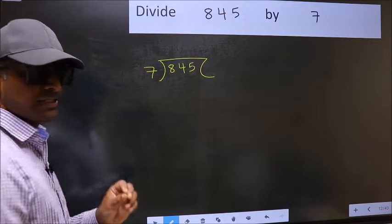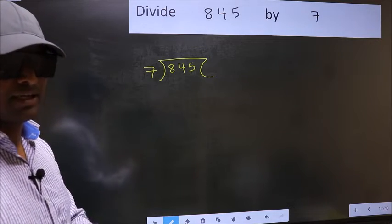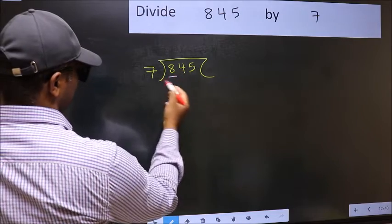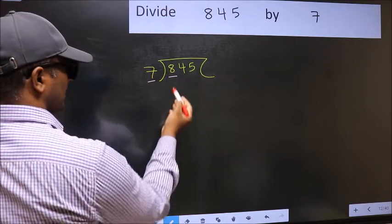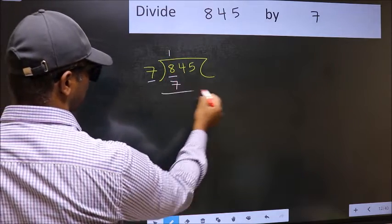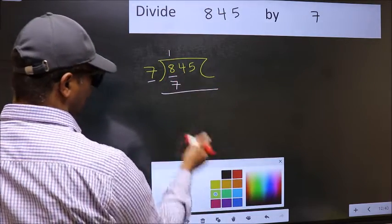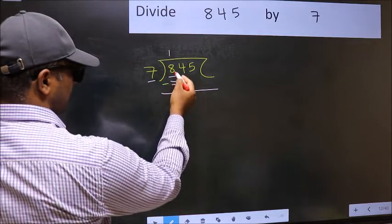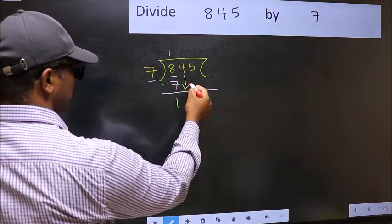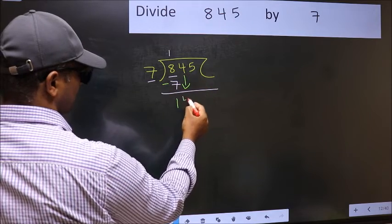This is your step 1. Next, here we have 8 and here 7. A number close to 8 in 7 table is 7 once 7. Now you should subtract. 8 minus 7, 1. After this, bring down the beside number. So 4 down.